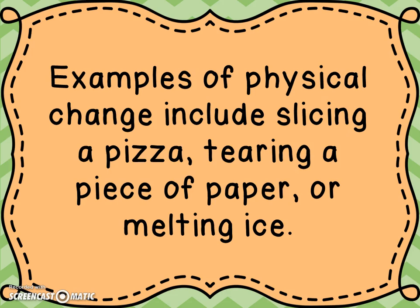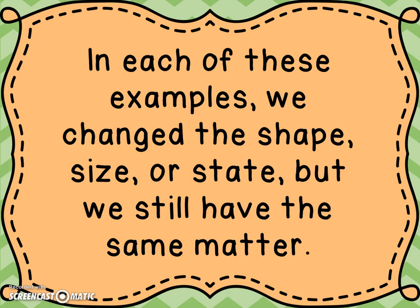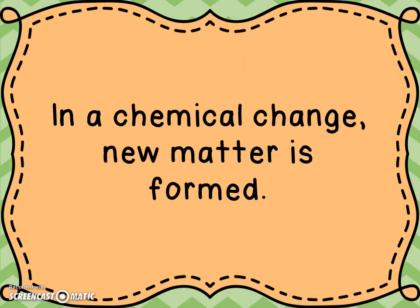Or melting ice — what we're doing is changing the state, taking it from a solid to a liquid. In all of these cases, we still have pizza, we still have a piece of paper, and we still have some form of water. In each of these examples, we change the shape, the size, or the state, but we still have the same matter.